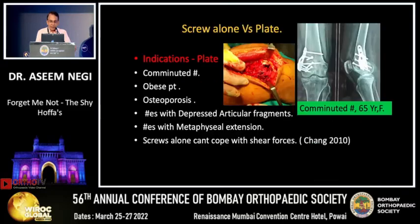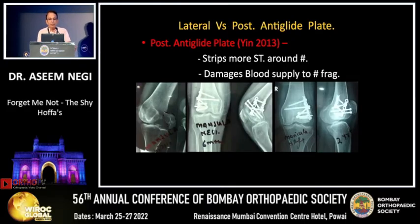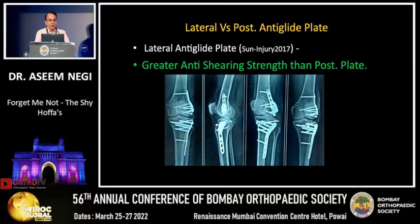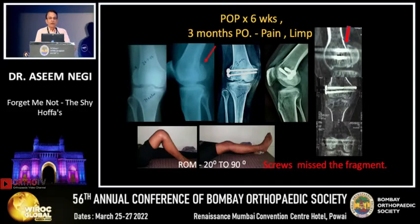A plate is mandatory for comminuted fractures, obese patients, osteoporotic fractures, fractures with depressed articular fragments, and fractures with metaphyseal extension, because screws alone cannot cope with shear forces. The posterior anti-glide plate strips more soft tissue around the fracture and damages blood supply. The lateral anti-glide plate has greater anti-shearing strength and is my preferred choice.